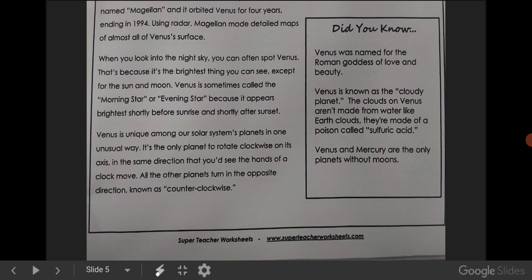Venus is unique among our solar system's planets in one unusual way. It's the only planet to rotate clockwise on its axis, in the same direction that you'd see the hands of a clock move. All the other planets turn in the opposite direction, known as counter-clockwise.